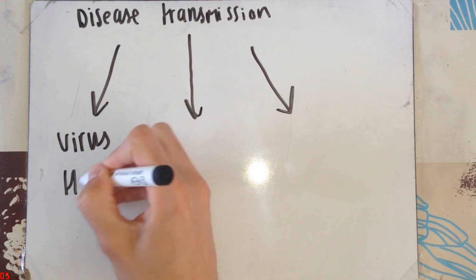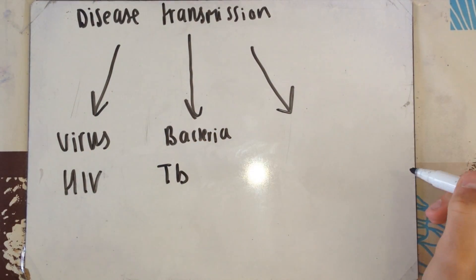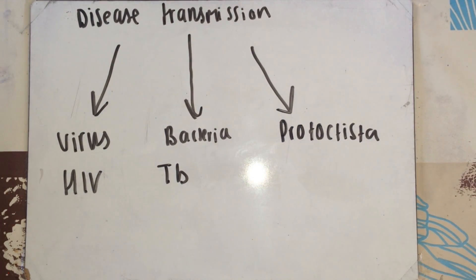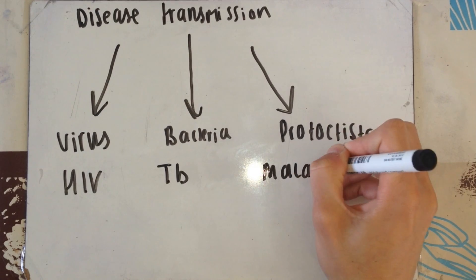I'm going to quickly go over these diseases again and give you an example. An example of a virus: HIV. An example of a bacterial infection: tuberculosis. An example of a disease caused by protozoa: malaria.